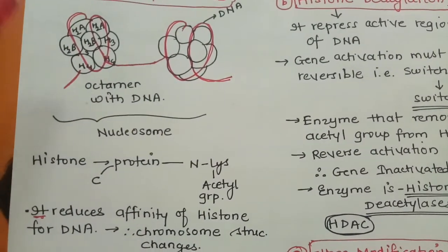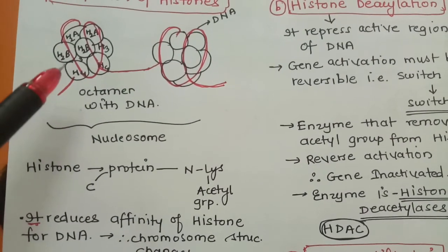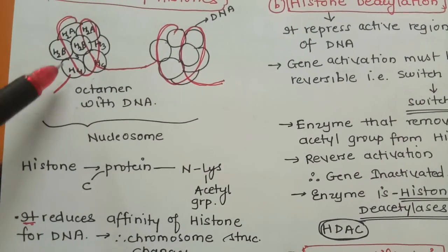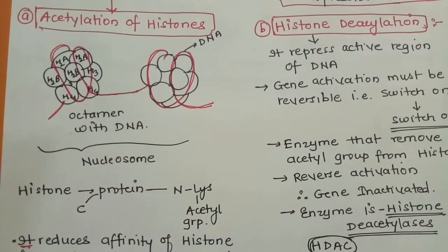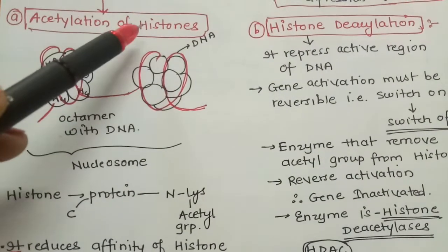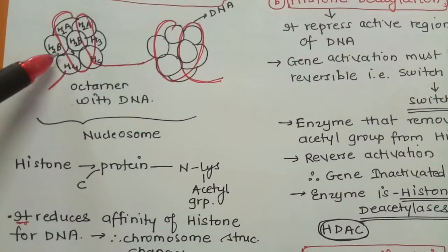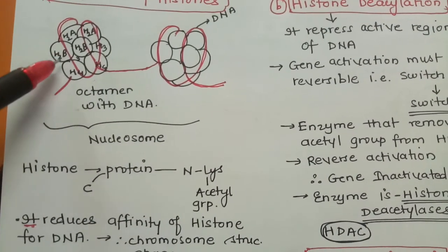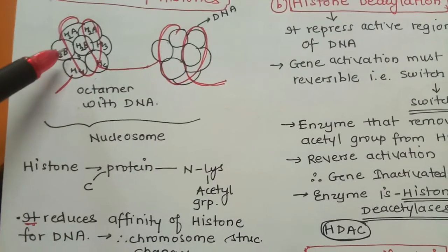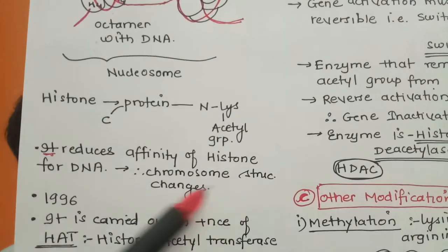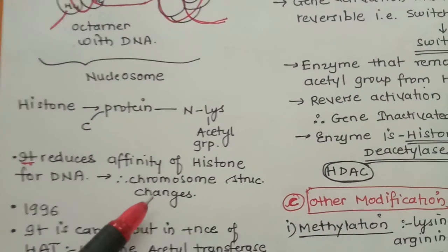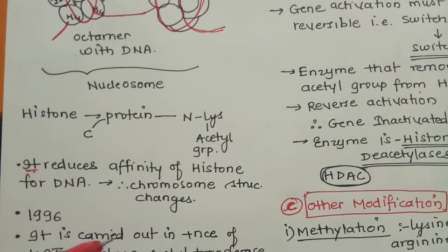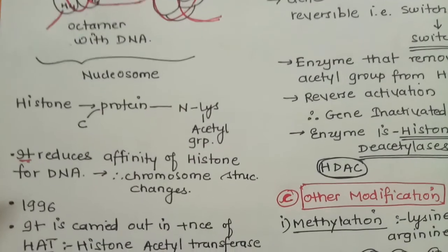When DNA becomes loose, it becomes available for transcription or replication. Now, if the gene is bound with histone proteins and you want to deactivate or inactivate the gene - you don't directly regulate the gene, you regulate through the histone protein. The histone protein is acetylated, reducing its affinity for DNA. The histone proteins leave, the DNA becomes loose, and therefore the chromosome structure changes - and thereby transcription and translation of that cell gets regulated, meaning it can be inactivated.